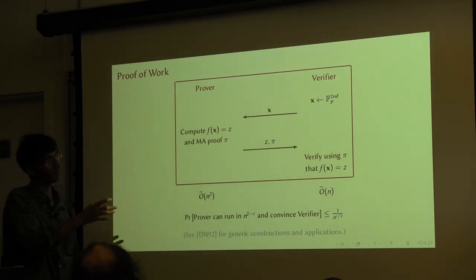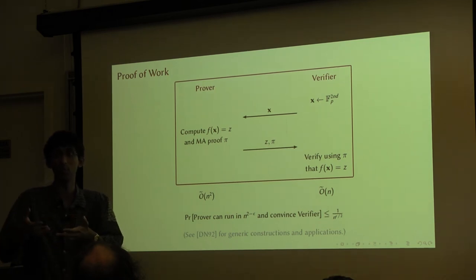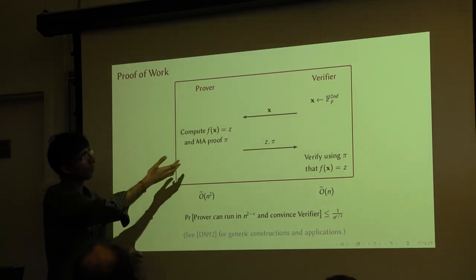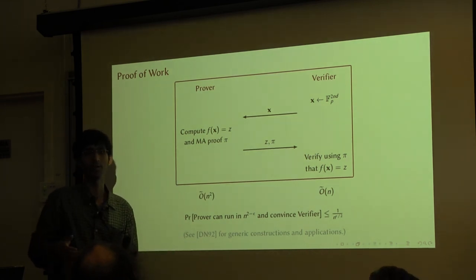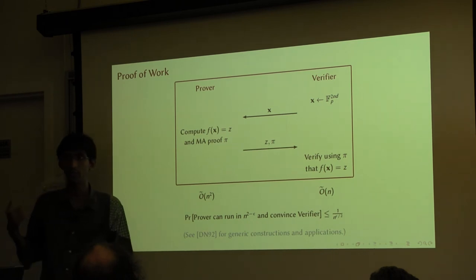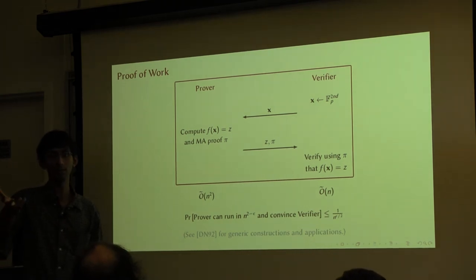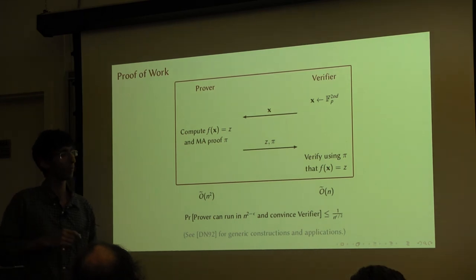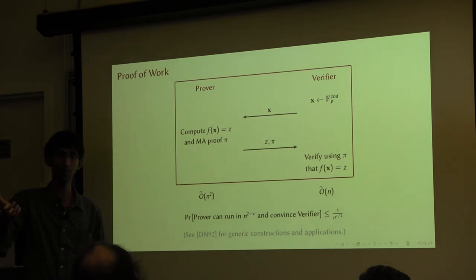There are certain other properties you need from a proof-of-work scheme. At least one other is that you cannot amortize a proof of work over different instances. We proved that assuming the orthogonal vectors conjecture, if I give you a random instance of size n, the prover takes n-squared time. But what about: if I give the prover n to the 10 instances of size n, maybe it can run in n to the 11th time and solve all of them? This turns out to be undesirable in certain applications.